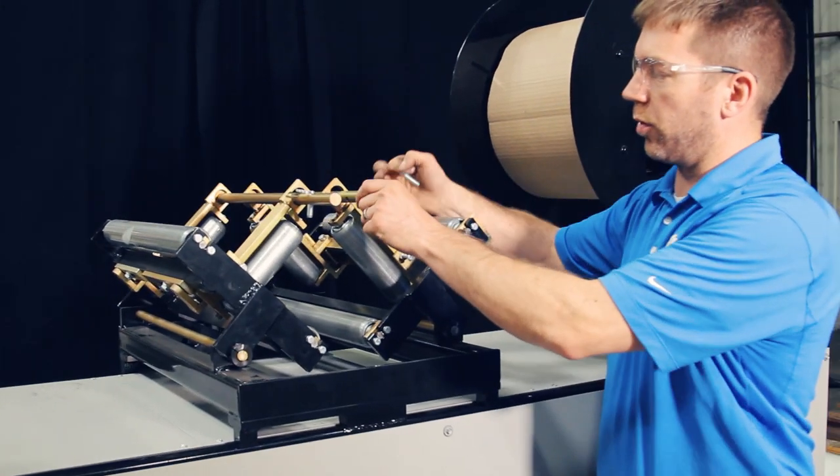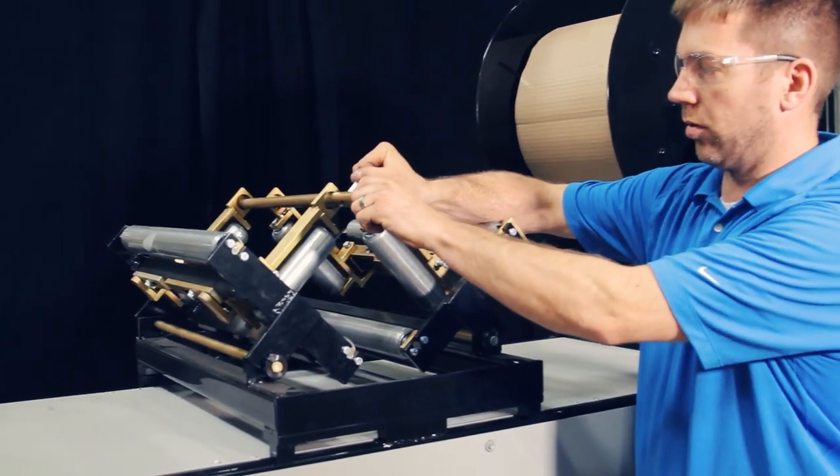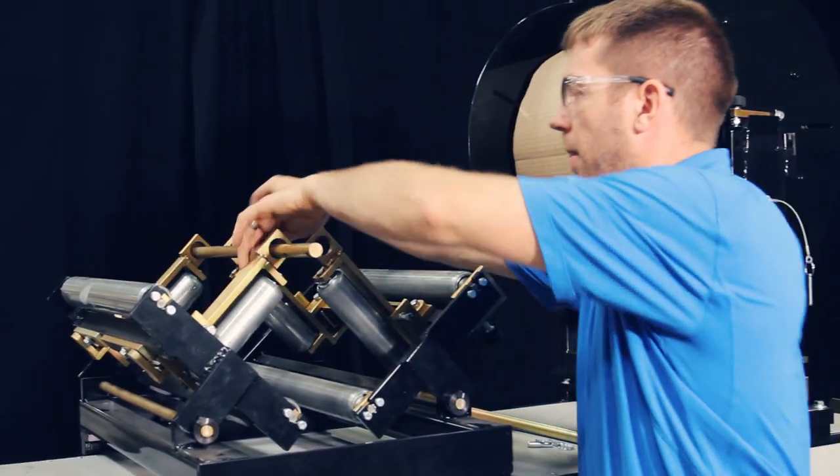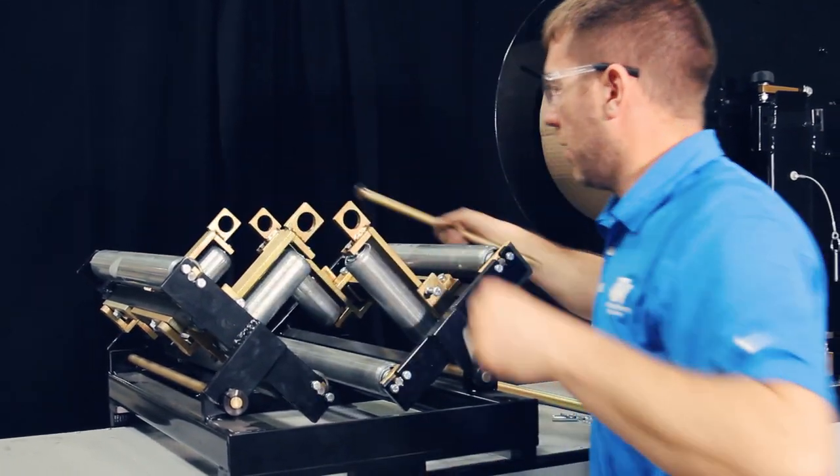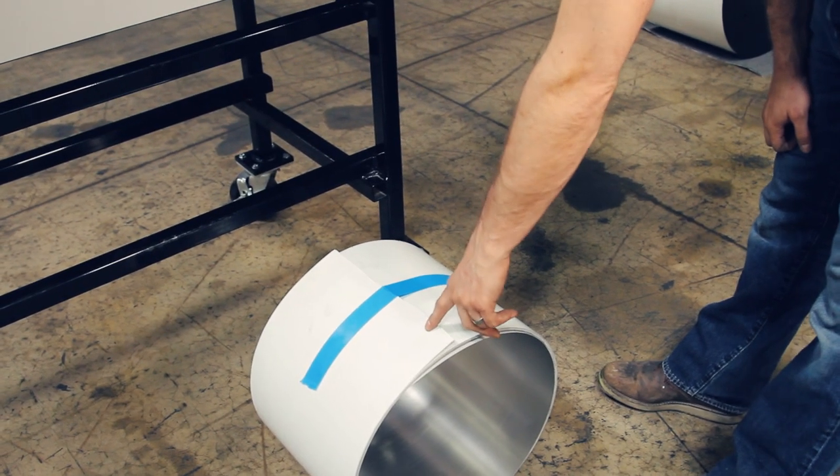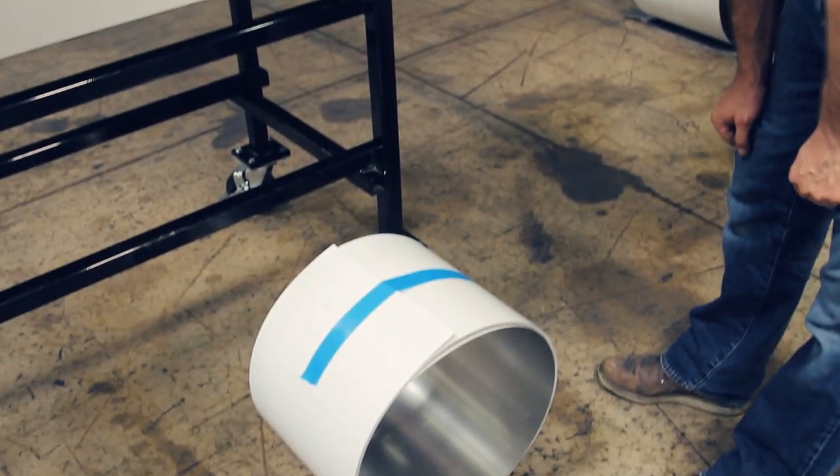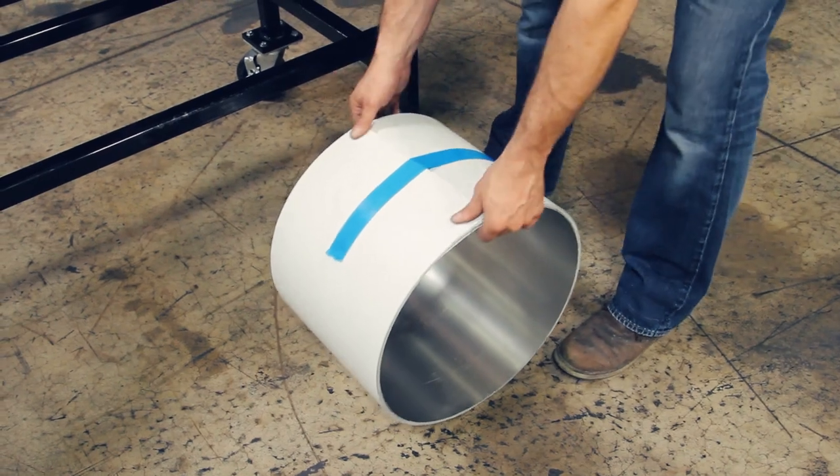First you want to pull the pins that prevent the cradle from opening up once the material is installed. Second, you want to set your coil next to the cradle. You want to have the end of the coil up on top and pointed towards the entry side of the machine.